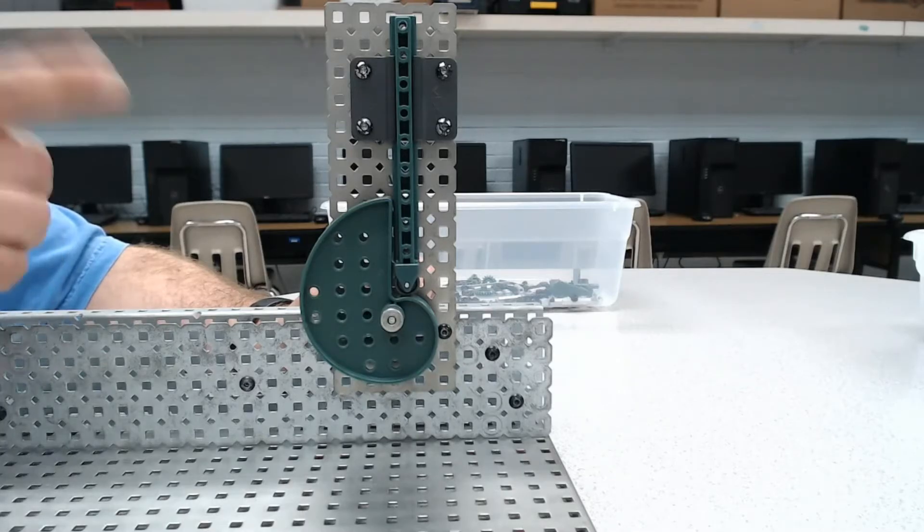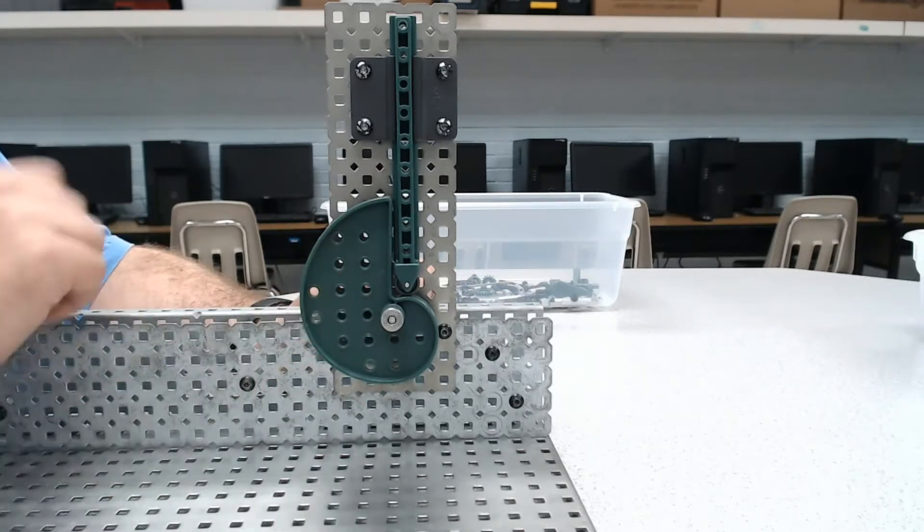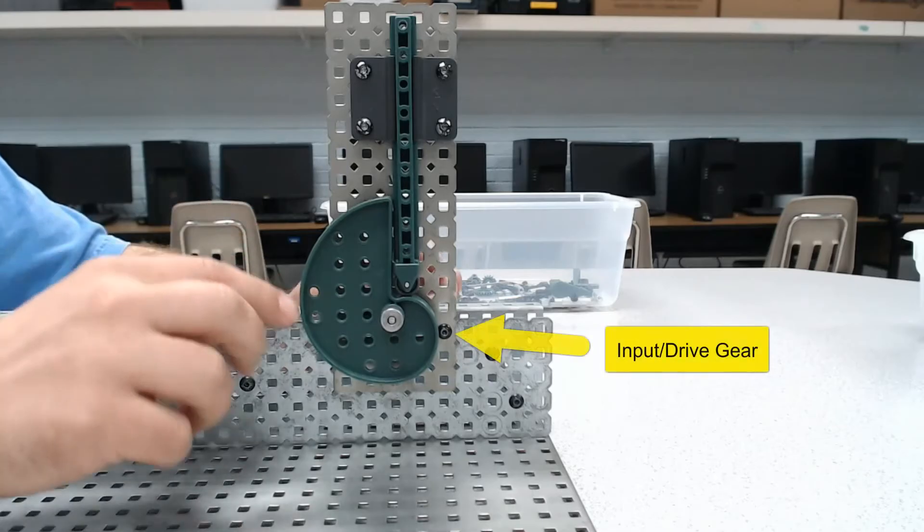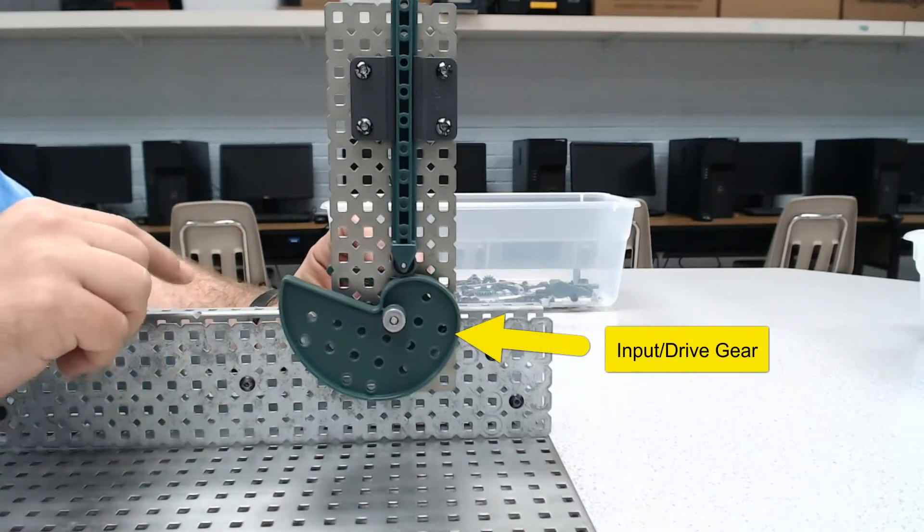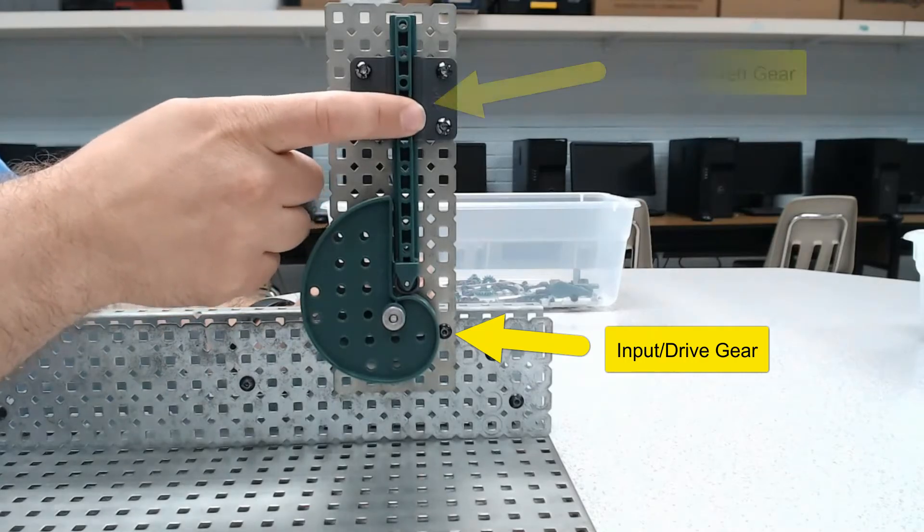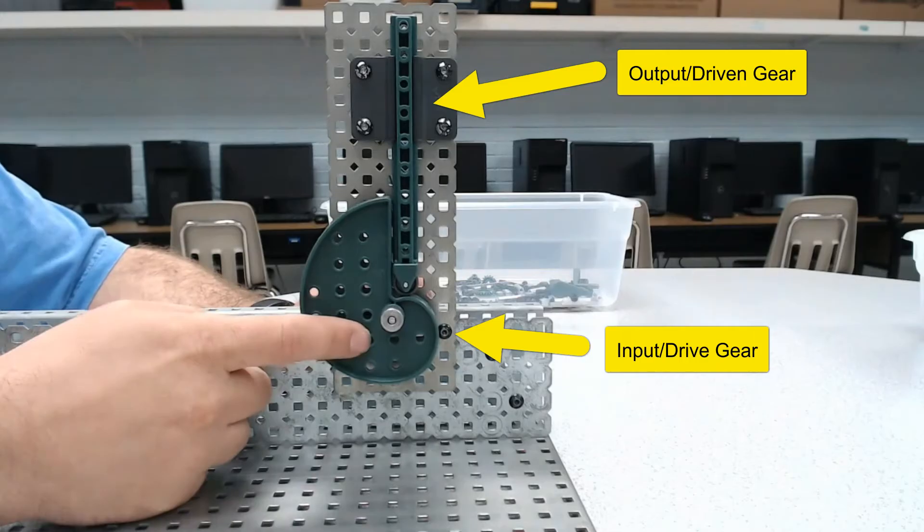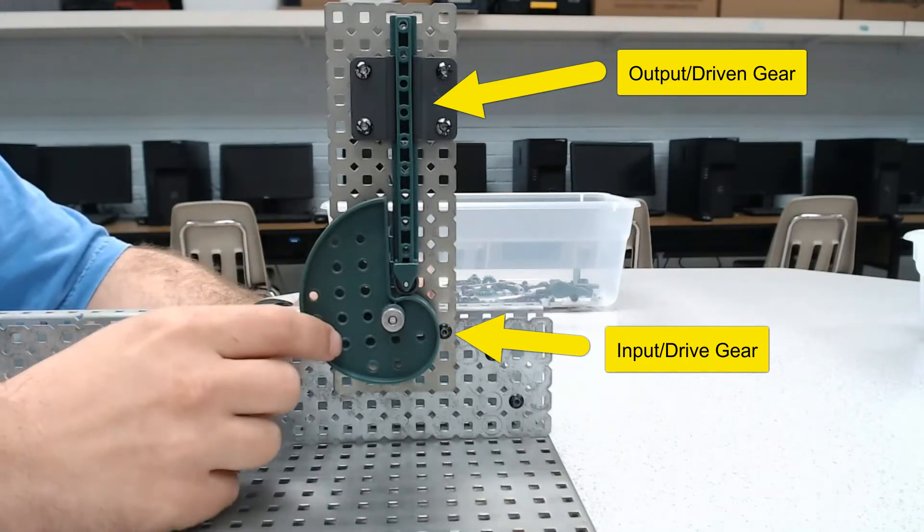Now based on that, which of these two do you think would be the input? If you predicted that this is the input, you would be correct. While you cannot see the handle which is right here on the back side, the fact that this one's called a follower kind of hints that this is the output as opposed to the input. So that's important to note here.